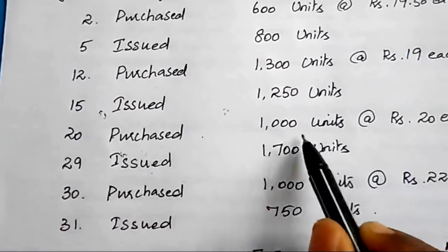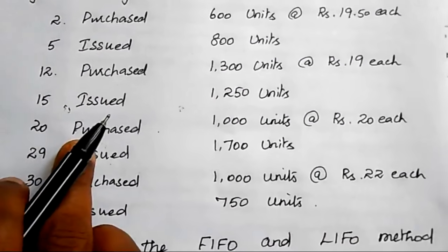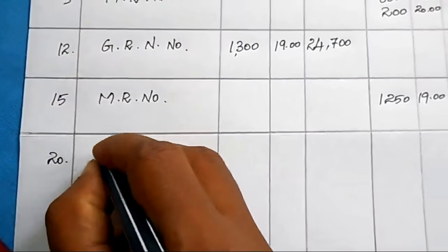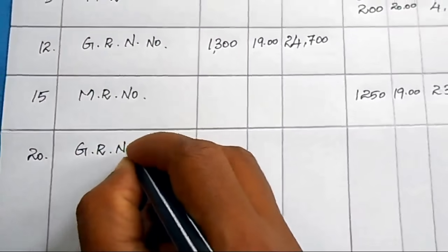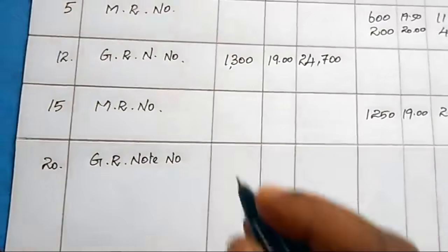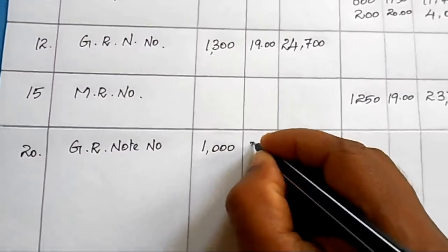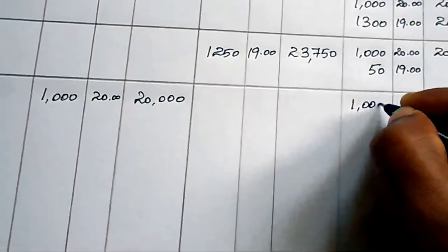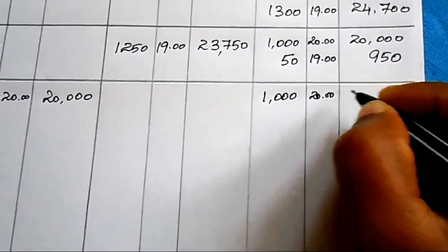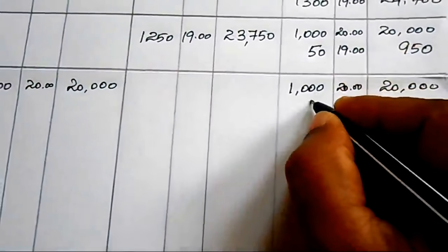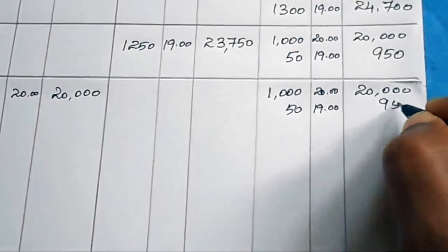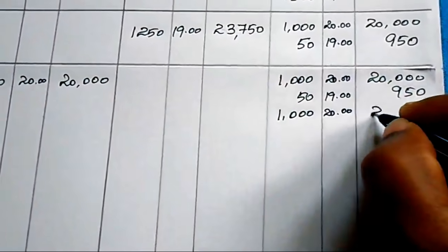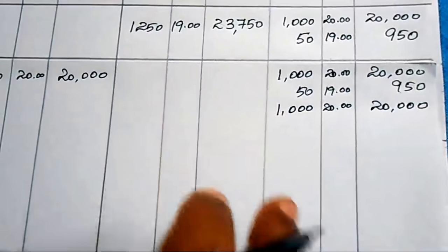On 20th May, purchased 1000 units at ₹20 each. Enter in the receipt column with the Goods Received Note number. Amount: 1000 × 20 = ₹20,000. Update balance: 1000 units at ₹20 = ₹20,000; 50 units at ₹19 = ₹950; plus new 1000 units at ₹20 = ₹20,000. Total: 2050 units across three lots.